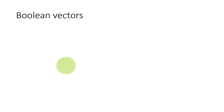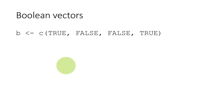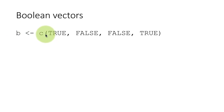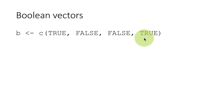First, let's understand the basis for all of this, which is Boolean vectors. A Boolean vector is a vector that contains Boolean elements. A Boolean element is either true or false, and remember these have to be spelled with uppercase. The two Boolean constants in R are TRUE and FALSE spelled with uppercase. Here I'm creating a variable called B and assigning to it a vector consisting of Boolean values. We use the C function to create a vector, and within parentheses we supply the Boolean constants as arguments.